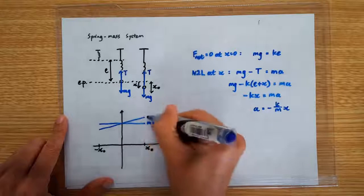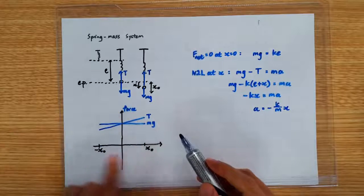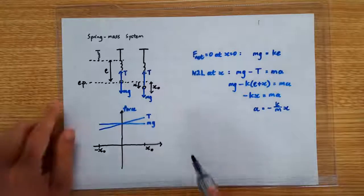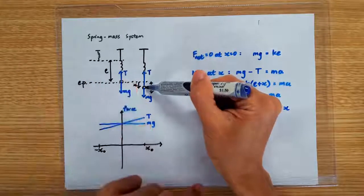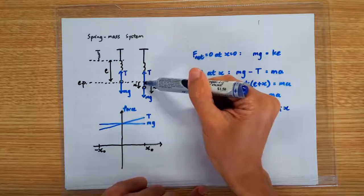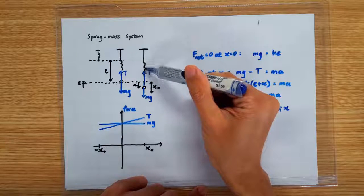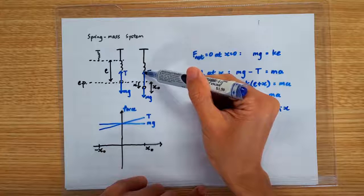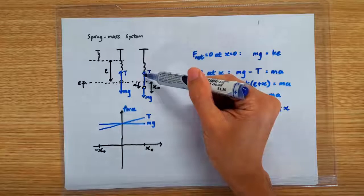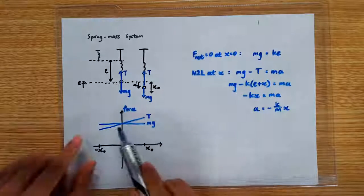So graphically, the tension force will look like this — I'm sketching the graph of the different forces against displacement. When you are displaced below the equilibrium position, the tension is larger than the weight, giving you an upward net force, which provides the restoring force that tries to accelerate you back towards the equilibrium position. On the other hand, if you are above the equilibrium position, because the spring is less stretched, the tension is smaller than the downward weight, giving you a net downward force that again provides the required restoring force to accelerate you back towards equilibrium.